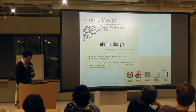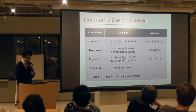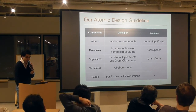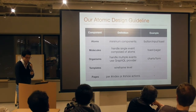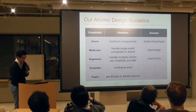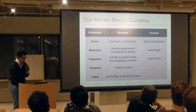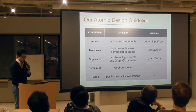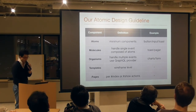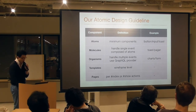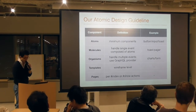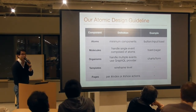We separated directory structure for each component. Here is our atomic design guideline. How to separate each component depends on each team and application. For example, atoms are minimum components like a button, input, or toast. Molecules are composed of atoms and can handle single events — components like a pager. Organisms can handle multiple events, like complex forms or charts, or use a GraphQL provider. Templates and pages are used per action and view.